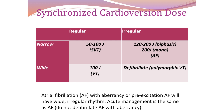The initial dose for synchronized cardioversion: for narrow regular rhythm such as SVT, start with 50 to 100 joules — SVT requires less energy and is easier to manage. For wide regular rhythm such as ventricular tachycardia, start with 100 joules. For SVT with aberrancy — which is wide and regular but not VT — use the same dose as other SVTs: 50 to 100 joules, not 100 joules.